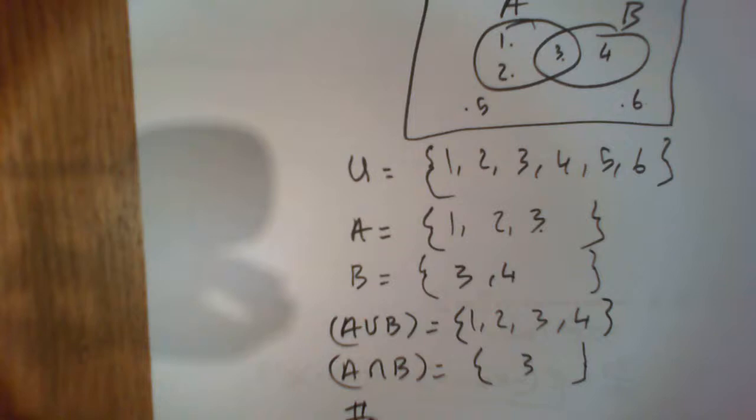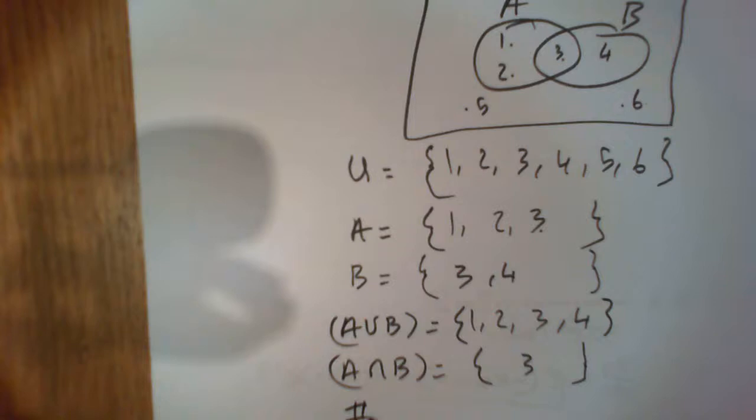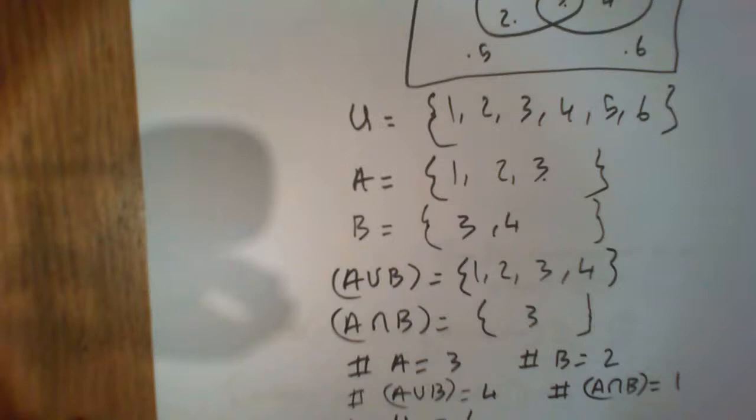Now let's get a bit more complicated. Let's go hashtag A - there's three elements in A. Hashtag B - there's two elements in B. Hashtag A union B - there are four elements. Hashtag the intersection of A and B - there's one. And hashtag the universal set - well there are six. So far so good.